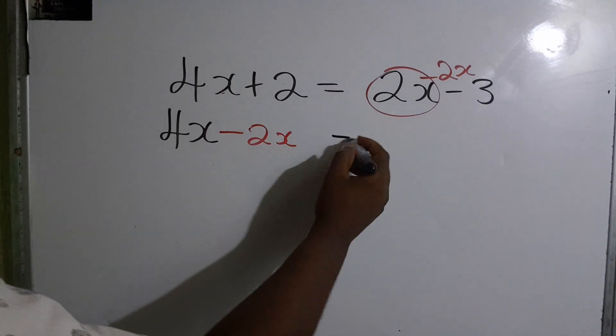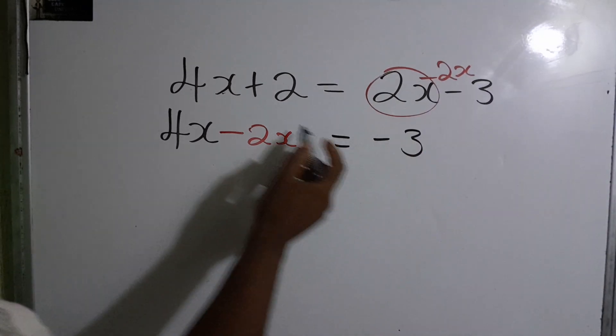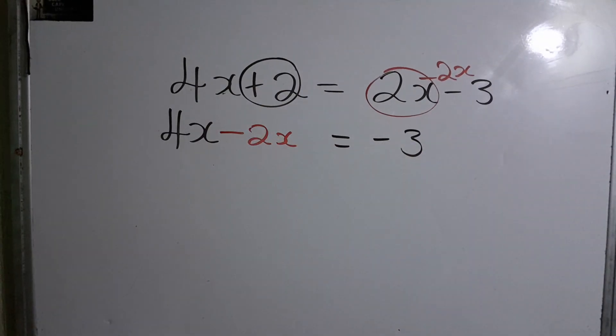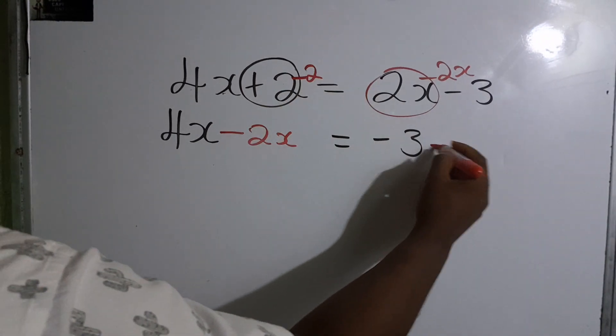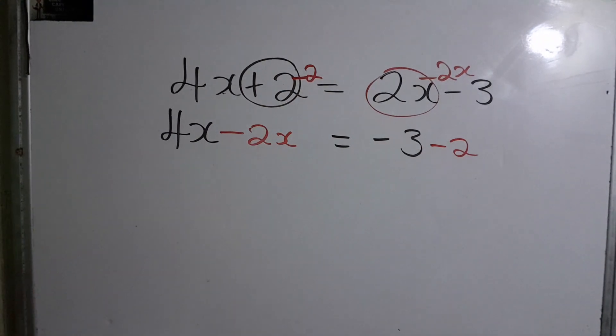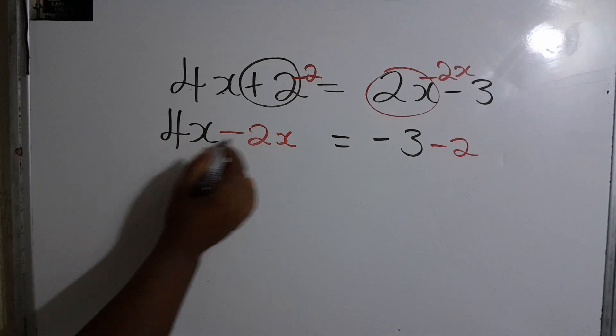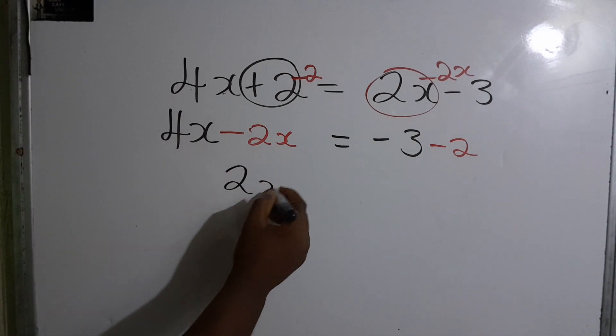We already have the negative 3 over here. So let's take the opposite of this plus 2 which is to minus 2. And let's simplify because we have all the like terms together. 4 take away 2, that will give 2.